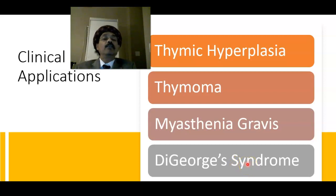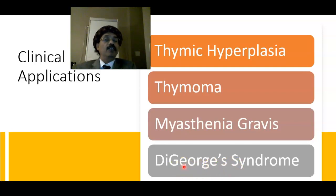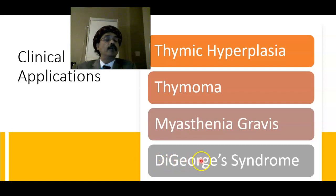DiGeorge syndrome is a clinical syndrome when the thymus gland has not developed. In that condition, the newborn and child will have continuous chronic infection and longevity will be very much reduced. Since the thymus is the source of T lymphocytes, which are associated with cell-mediated immunity, this will be lost in DiGeorge syndrome, leading to sinusitis, pharyngitis, laryngitis, bronchitis, pneumonia, and early death in children.